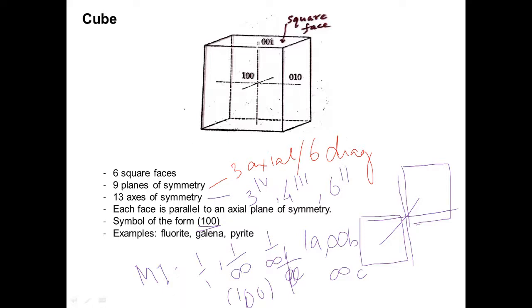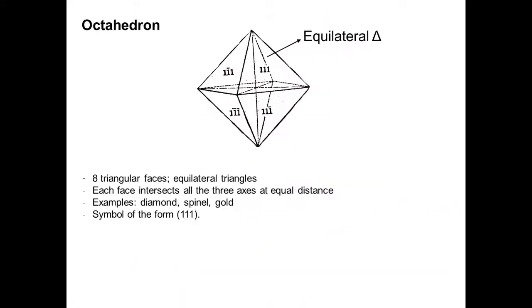In crystal systems other than isometric, we call such faces pinacoid faces, but in the cubic system we simply call it a cube — not a pinacoid — because here the three axes are the same.